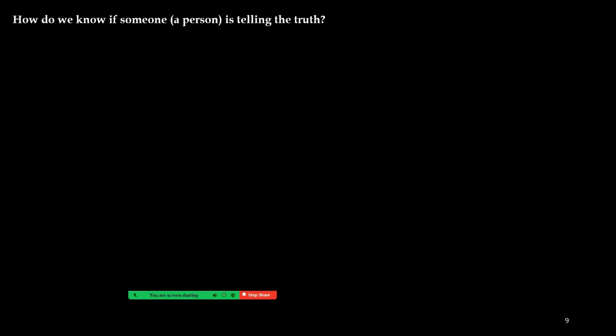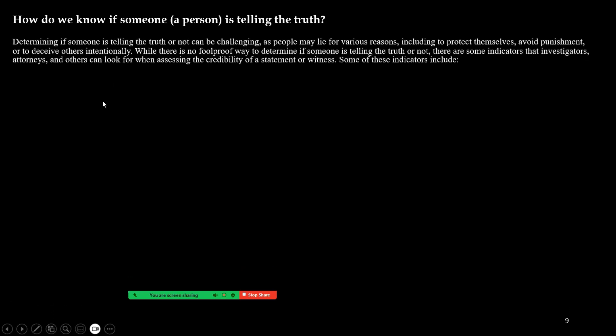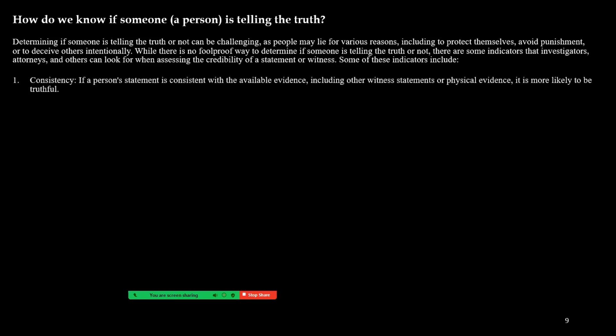How do we know if someone is telling the truth? No matter what kind of interview it is, how do you know if you're getting something honest and truthful? Determining if someone is telling the truth can be challenging, as people may lie for various reasons — to protect themselves, avoid punishment, or deceive others. There is no foolproof way, but there are some indicators that investigators and attorneys can look for. Consistency: if the person's statement is consistent with the available evidence, including other witness statements or physical evidence, it's more likely to be truthful.